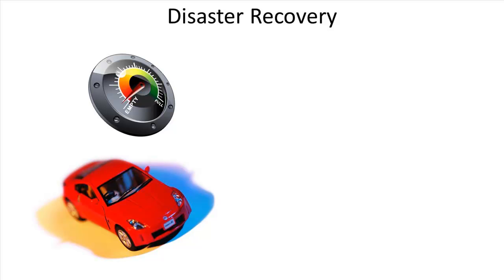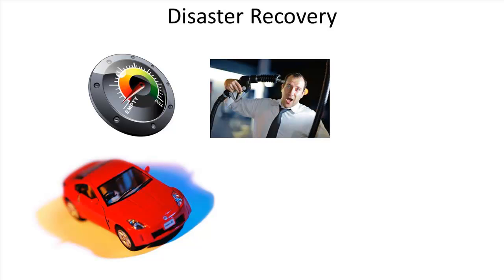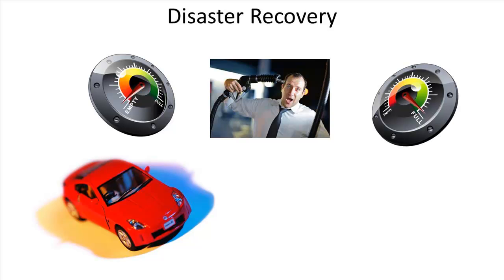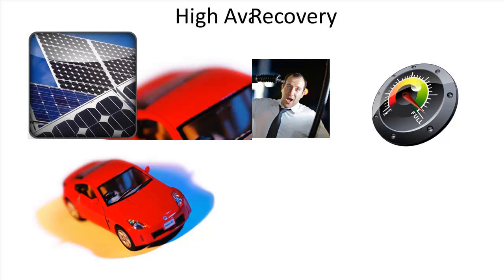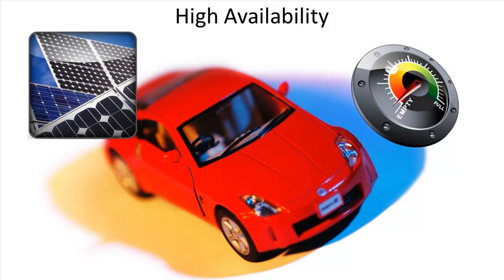If your car runs out of fuel before you notice, that's unplanned downtime. You take it to the filling station, fill it up, and it can resume normal operations — it's available again. But what if your car had an alternative power source so it could keep running without needing to stop for fuel? Having two available resources that by themselves keep your system running is a form of high availability. The main difference between disaster recovery and high availability is that DR processes have some expected downtime, whereas a perfect HA solution has no downtime.